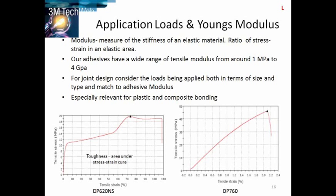Toughness equals the area under the stress-strain curve. So the DP620, an easy-to-use system, absorbs energy and will be a good choice where some flexibility in the joint is needed, or in impact situations. This is often used for composite joints. This type of data is fundamental in structural joint design — understanding the energy characteristics of your application, the loading, and matching that to the adhesive modulus.